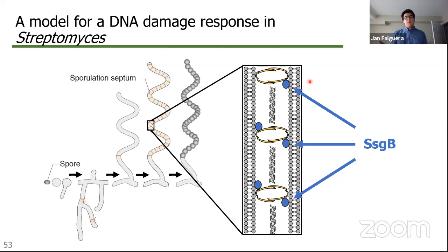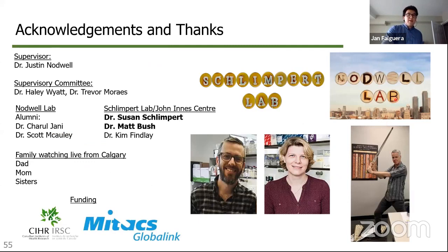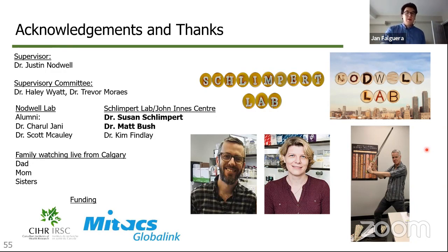To leave you with a general model: Streptomyces are very interesting bacteria because of their morphological complexity. SSGB must be present in order to complete the spore formation process. What I've discovered is that if you grow Streptomyces in the presence of DNA damage, you block the spore-forming process, and part of that response could be a lack of SSGB present to prevent sporulation-specific cell division in a deleterious condition. I'd like to thank Justin for supervising and guiding me, and for introducing me to colleagues at the John Innes Centre — specifically Susan Schlimpert and Matt Bush for their training and time. Thank you, stay safe and stay healthy.